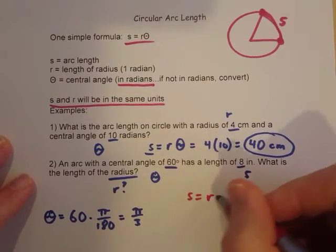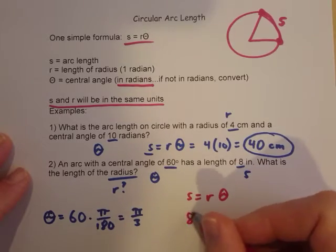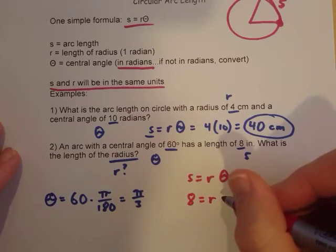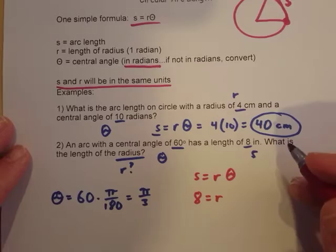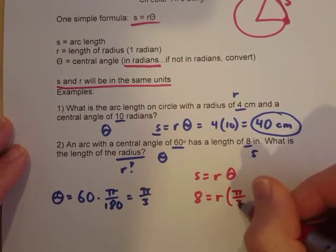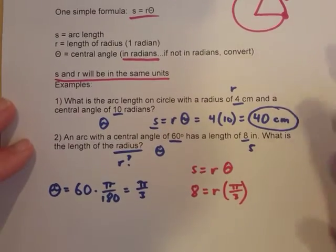Now, to plug into the formula. S equals R theta. We know S. That is 8. We're trying to find R, so we put that in as the variable. And then we just found out what theta was. So we're going to put in theta as pi over 3.